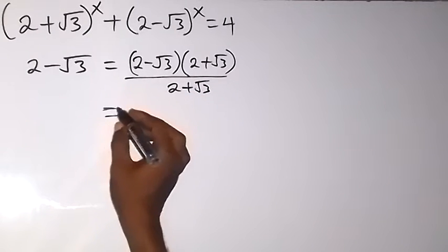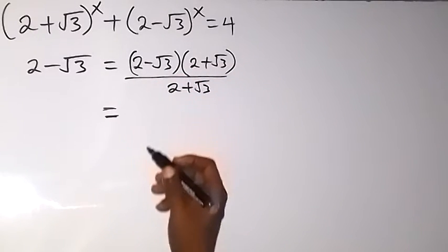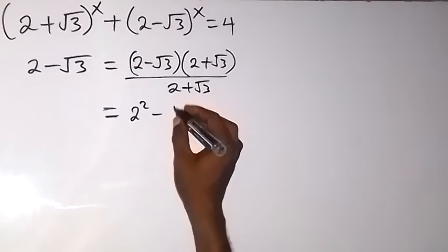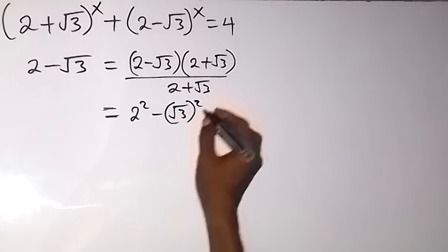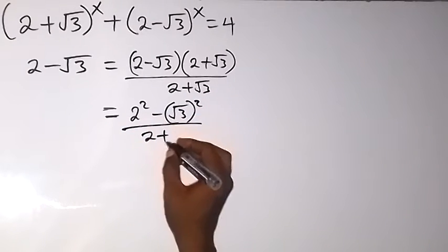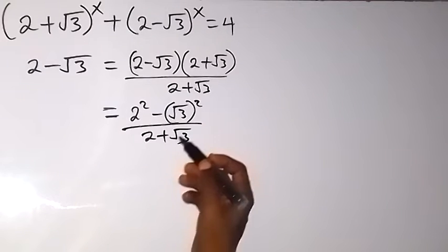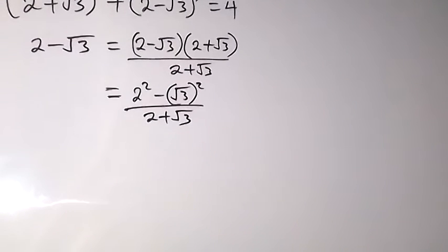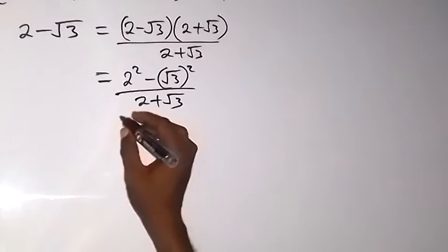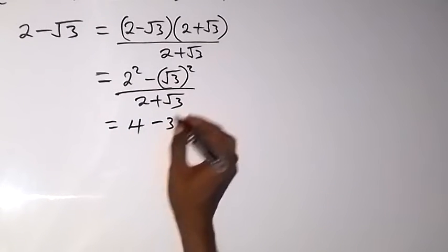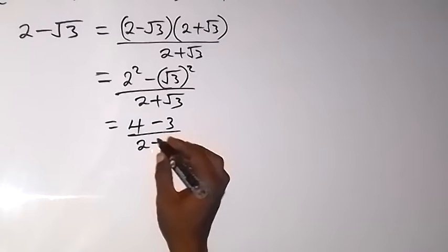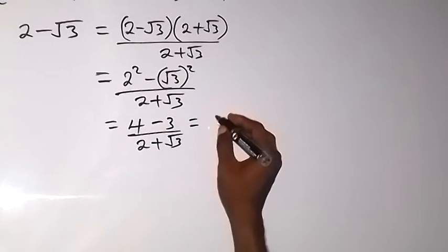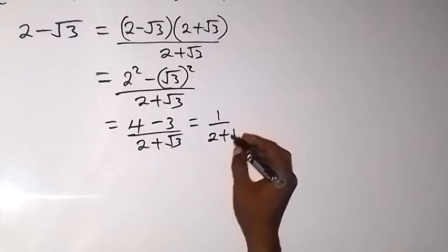But now let's expand this. There are conjugates here, and when we expand conjugates we have 2 squared minus root 3 squared, then over 2 plus root 3. This gives us 4 minus 3 over 2 plus root 3. The square and square root cancel, so we have 4 minus 3, which is 1 over 2 plus root 3.